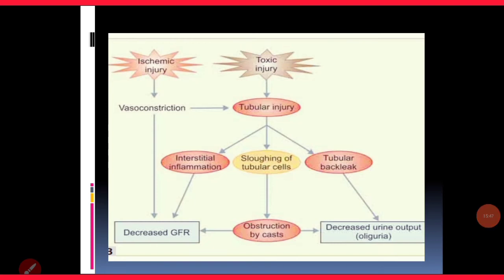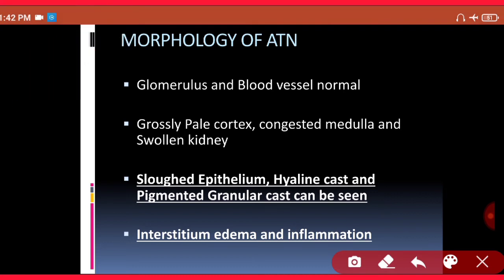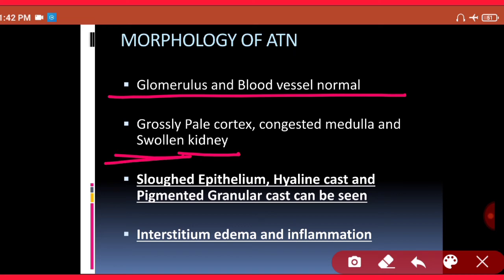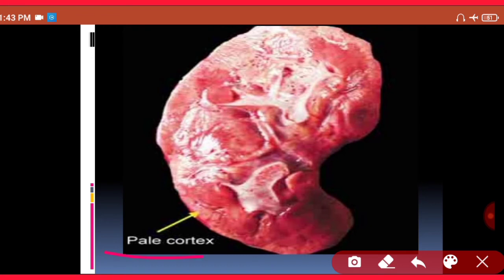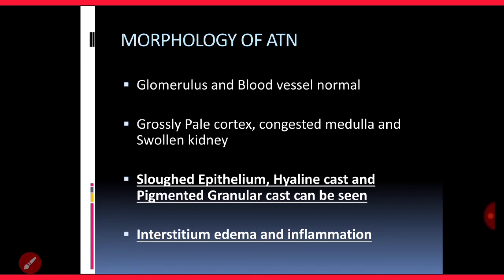Now we will see the morphology of acute tubular necrosis. Since this is a disease of the tubular interstitium, the glomerulus and blood vessels are absolutely normal. Grossly, the kidney will be swollen with increased size, the cortex will be pale, and the medulla will be congested — appearing a bright red color. This is the gross finding of acute tubular necrosis.